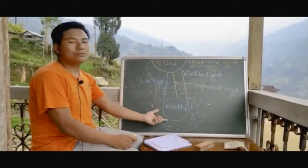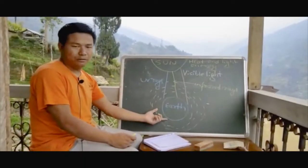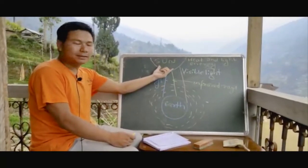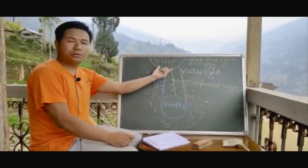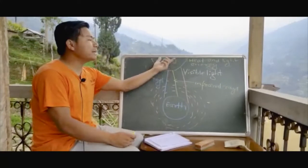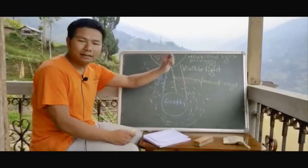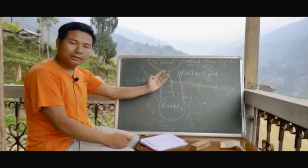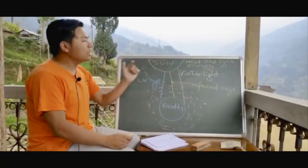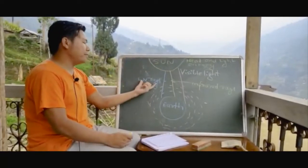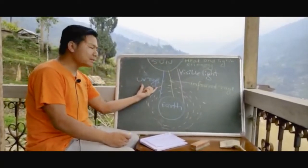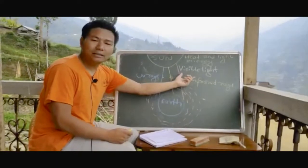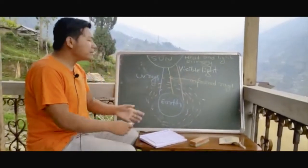The sun is the ultimate source of energy. It gives us heat energy and light energy, which directly come to the Earth. Light energy comes in the forms of ultraviolet rays, infrared rays, and visible light.